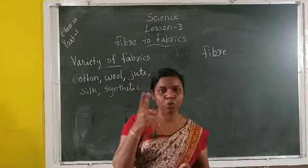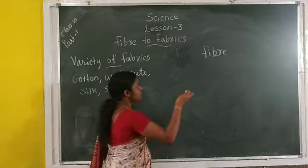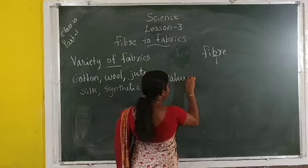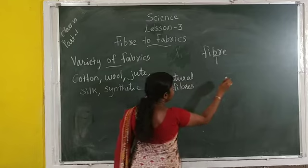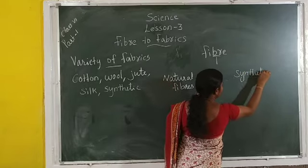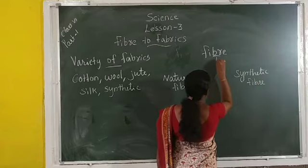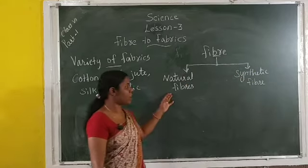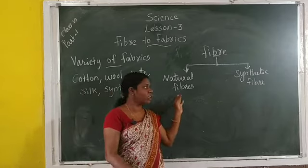Fibers are of two types: natural fibers and synthetic fibers. Natural fibers are obtained from plants and animals.